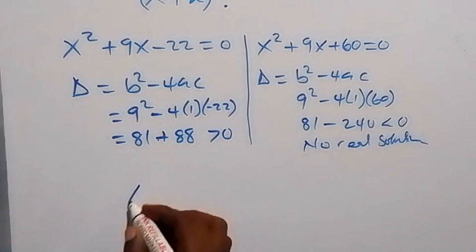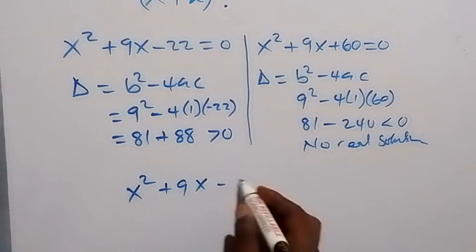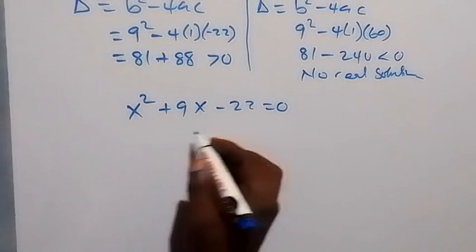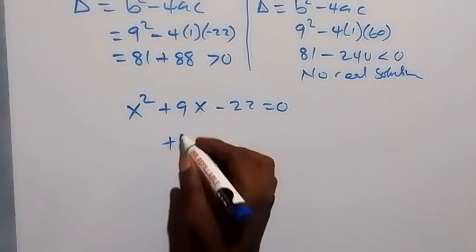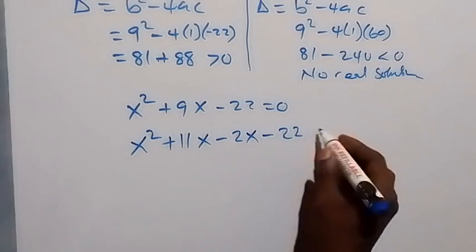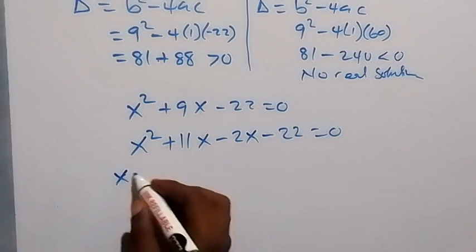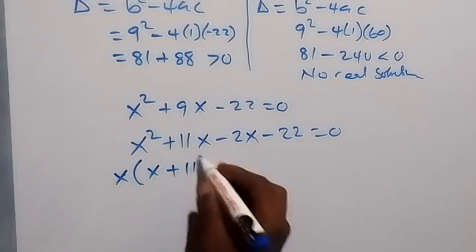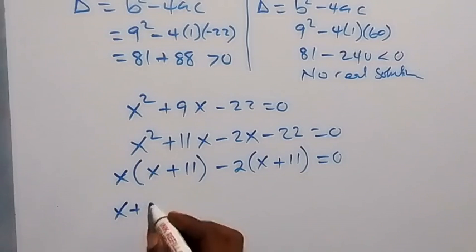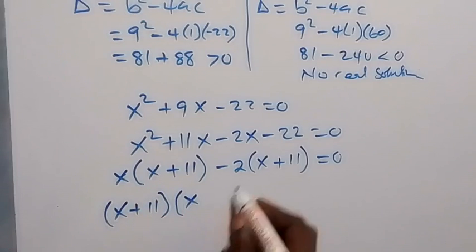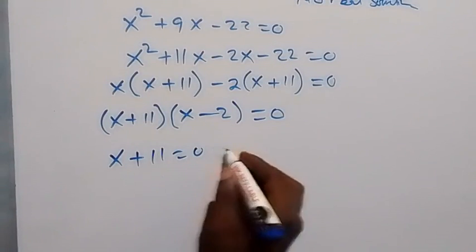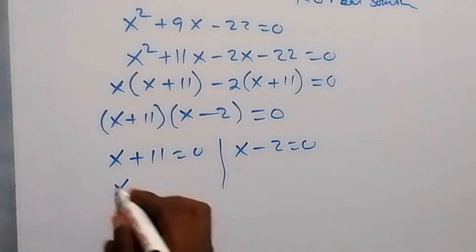We factor x² + 9x − 22 = 0. We need two numbers that multiply to −22 and add to 9: these are +11 and −2. So we write x² + 11x − 2x − 22 = 0, grouping as x(x + 11) − 2(x + 11) = 0, giving (x + 11)(x − 2) = 0. Therefore x = −11 or x = 2.